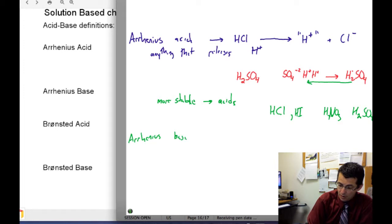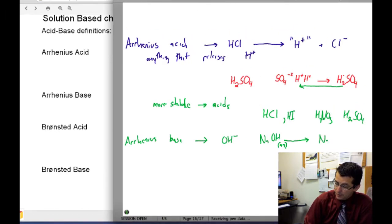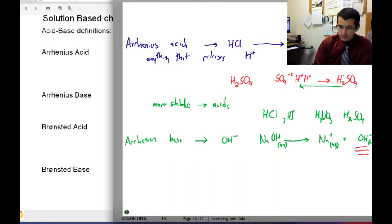Arrhenius acids and bases are the most simplistic of these. The Arrhenius base is usually anything that contains the hydroxide ion that releases hydroxide ions. For example, when you place NaOH into solution, it will form Na+ and release OH-. These are Arrhenius bases, so that hydroxide is what we call the base. These are very broad and old definitions.